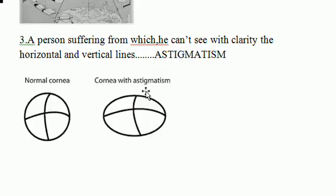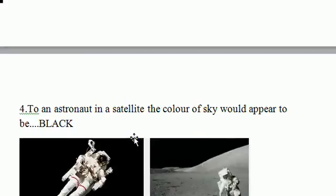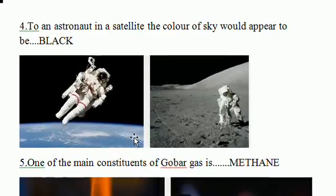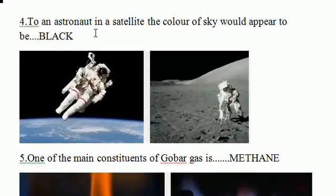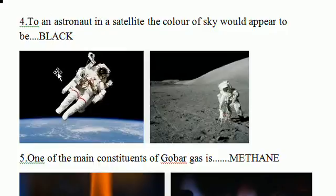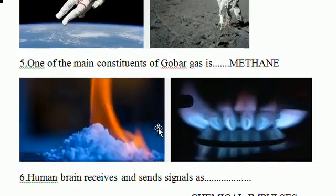The fourth question: to an astronaut in a satellite, the color of the sky would appear to be black. From the picture shown, we can observe that the sky appears black for the astronaut.